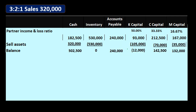We did everything properly and still ended up with a negative capital account, because we sold the assets for less than book value, resulting in a loss that flipped K's positive capital account to negative. So we go to K and say the company is closing, your capital account went negative — please pay the partnership so we can complete the closing process. K pays the company $12,000, bringing K's capital account back to zero.